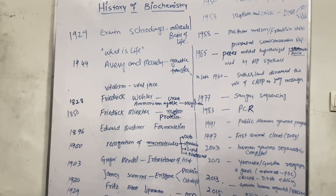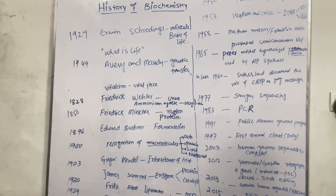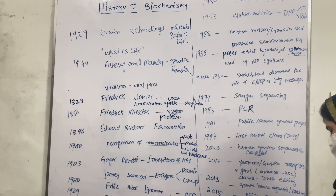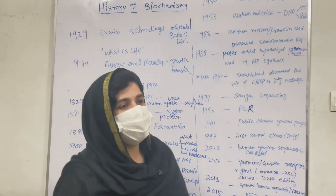In 2015, Aziz Sancar got the Nobel Prize for the repairing of different sequences of DNA. In 2017, scientists recognized all those genes which are involved in diseased conditions such as diabetes mellitus type 2, leukemia, and cystic fibrosis. These three are common diseases whose responsible genes were identified through that genetic research.